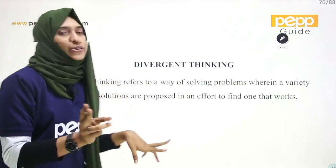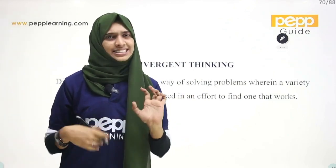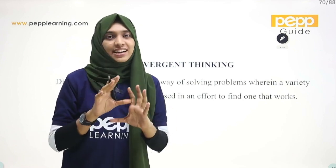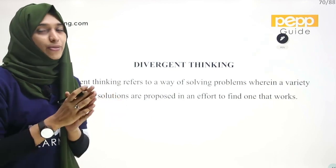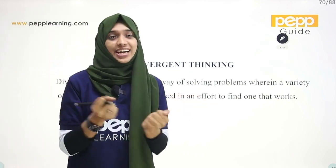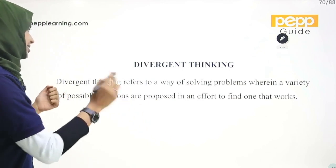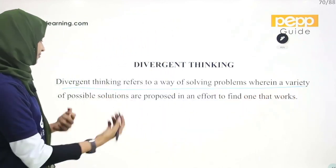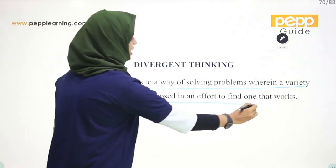There is a method called Divergent Thinking. What is Divergent Thinking? It is a specific idea of a problem — a different idea of solutions. Divergent Thinking refers to a way of solving problems wherein a variety of possible solutions are proposed in an effort to find one that works.